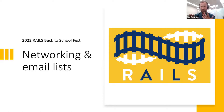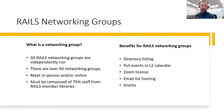I know that a lot of you use IELTS to connect with other libraries, and I fully endorse that. But I also want to let you know that Rails has things to offer as well, and you can get resources through Rails that are pretty useful in terms of connecting you with other libraries. So the first thing I'm going to mention here is networking groups. I want to define what a networking group is from the Rails perspective: a Rails networking group is any group that meets semi-regularly to talk about issues in libraries.